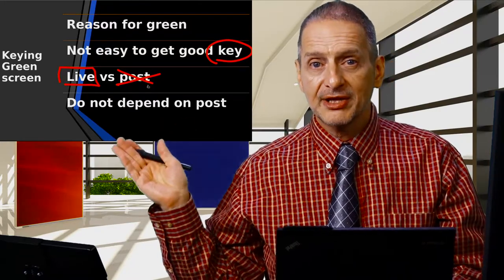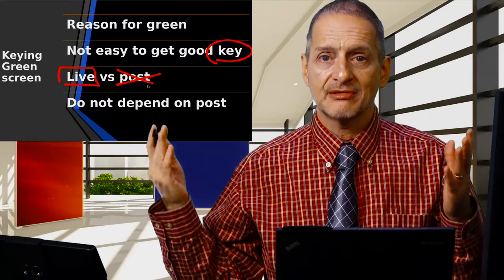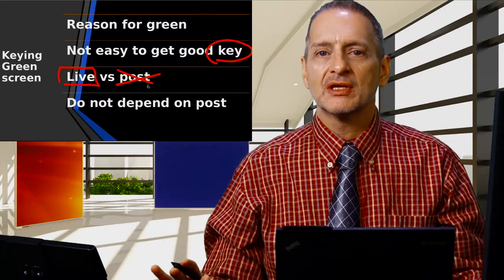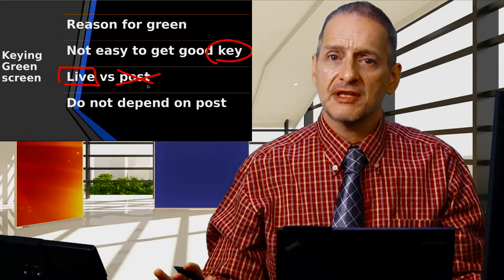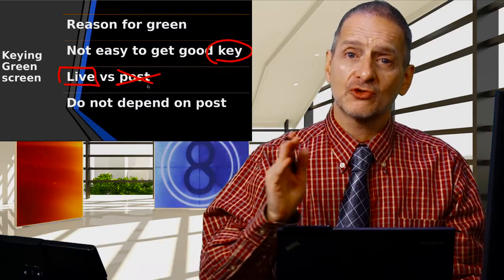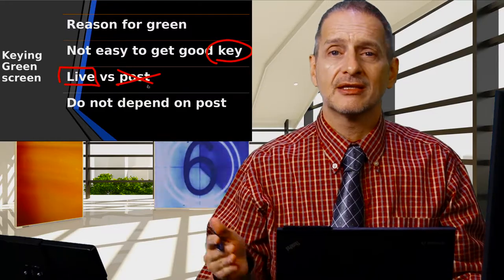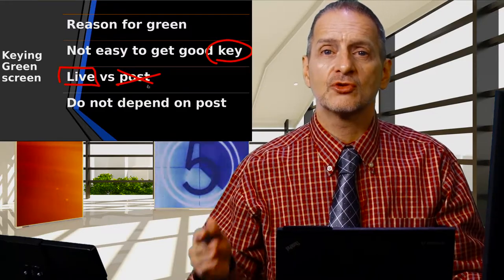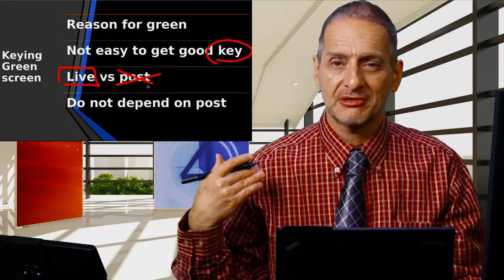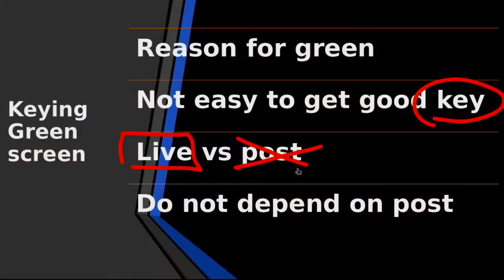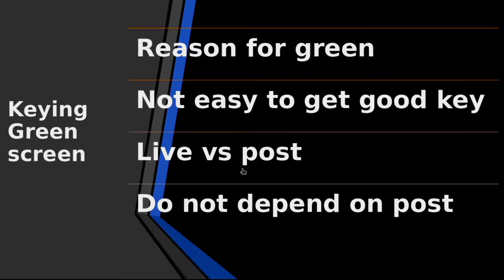Whereas if you do it live like this, you can see what's happening. This is the result. What you see is what you get. It also saves a lot of time and trouble. What if something goes wrong — the lighting was not right, or your software does not give you a good key? It's too late to change it later after you've already recorded the talent. So I like to go live. Lots of people don't like to, but I like to do that and save trouble. I don't want to do it in post-production.